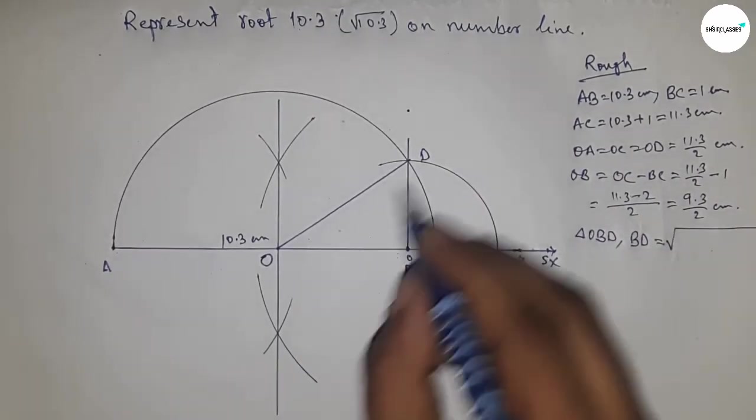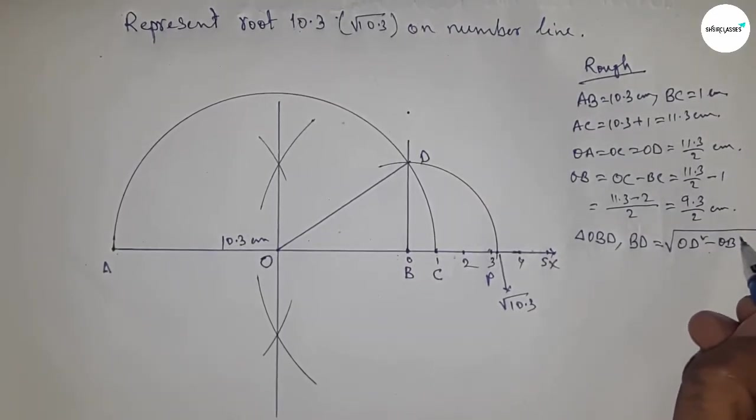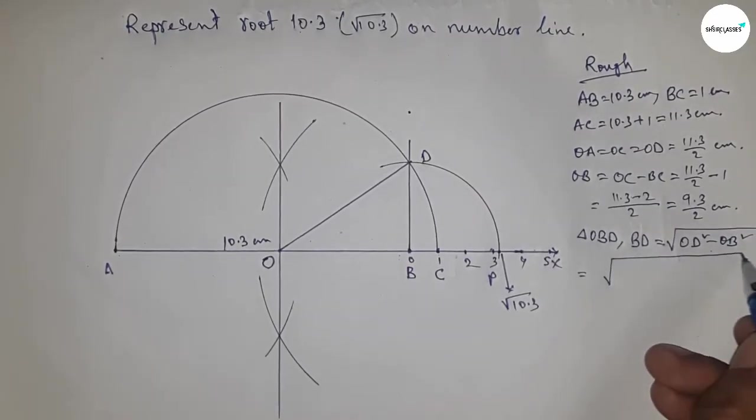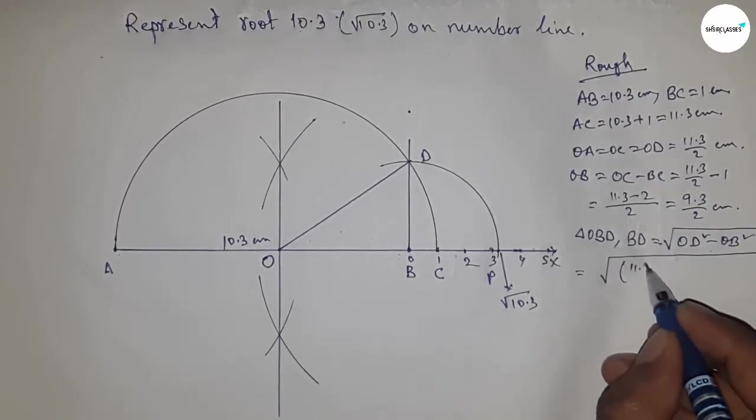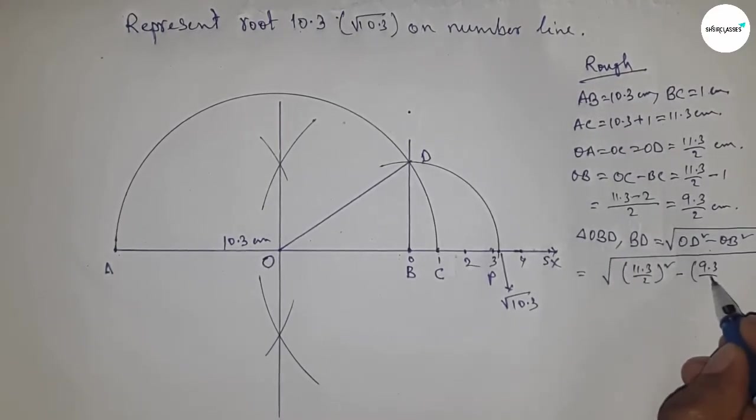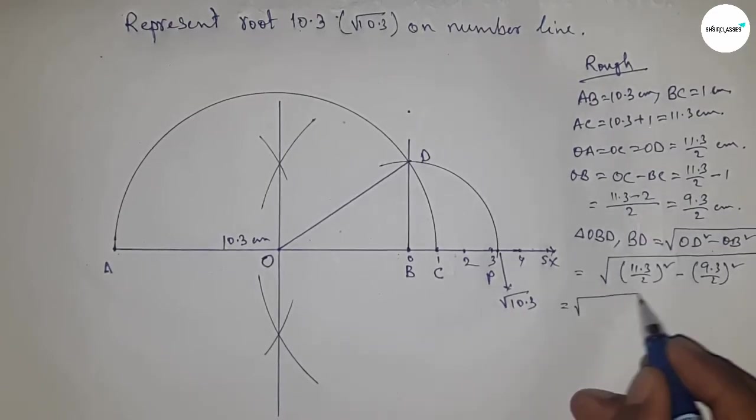OD square minus OB square, hypotenuse square minus base square. Now putting the value of OD and OB. Next I'm going to use a formula: a square minus b square equals a plus b times a minus b.